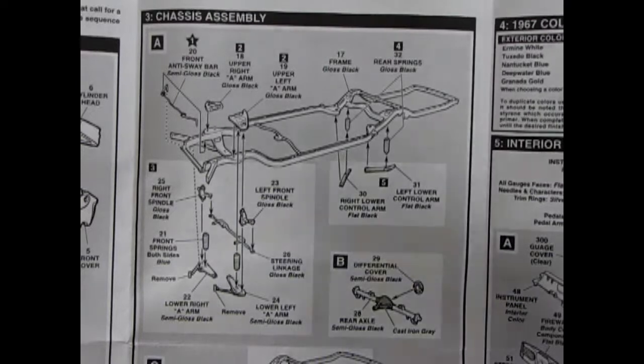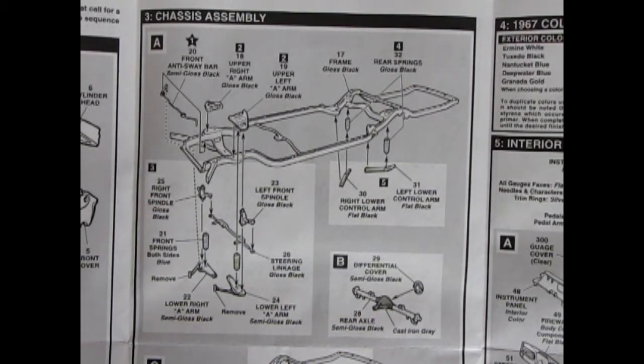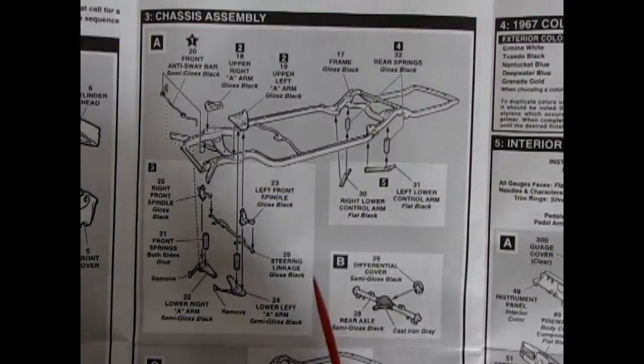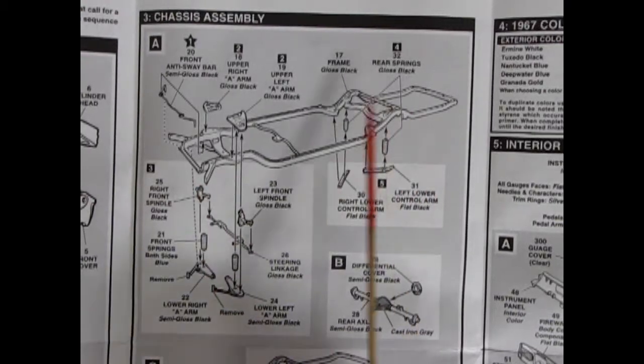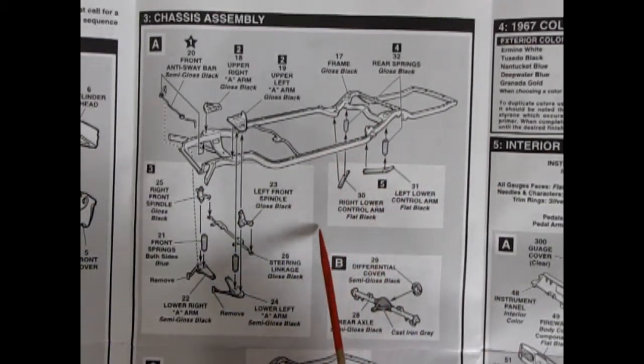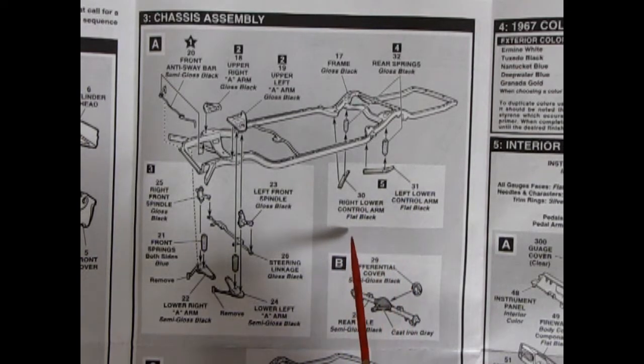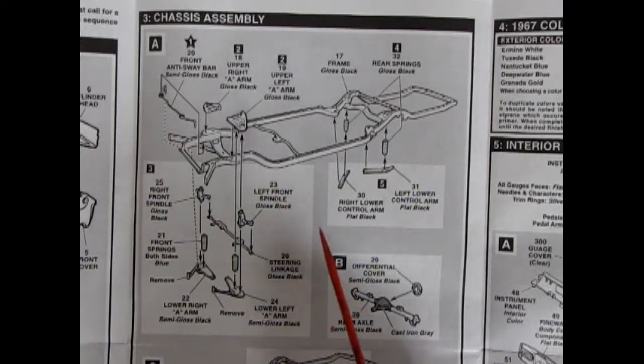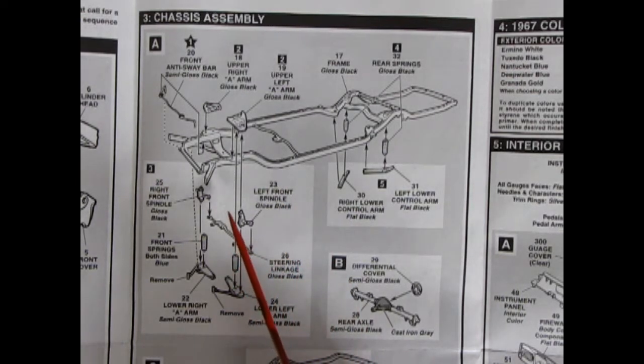Getting into our next panel here we've got our chassis assembly and what is nice is the full perimeter frame that they give you in here. Then you've got your coil springs and your right and left lower control arms. You've got the full suspension here and this one's nice because you can actually make this have poseable steering. Very easy. They give you everything right there.